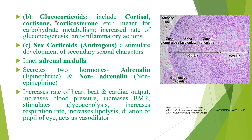The next hormone secreted by the adrenal cortex is glucocorticoids, which include cortisol, cortisone, corticosterone, etc. These hormones are involved in carbohydrate metabolism — they increase the rate of gluconeogenesis, decrease peripheral utilization of glucose, and have anti-inflammatory and anti-allergic actions. Next are the sex corticoids or androgens, which stimulate the development of secondary sexual characters.